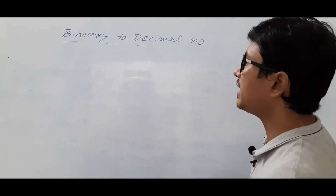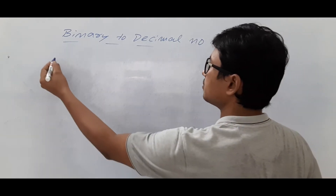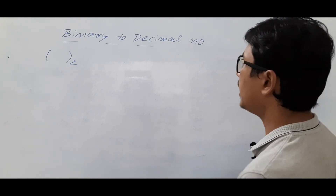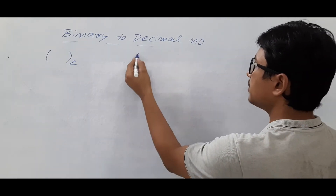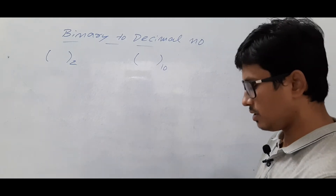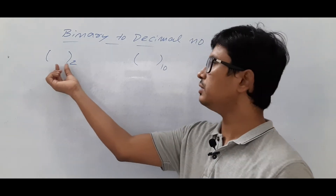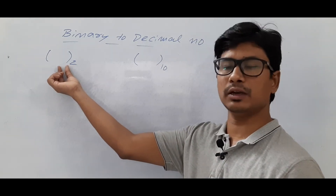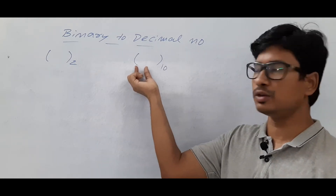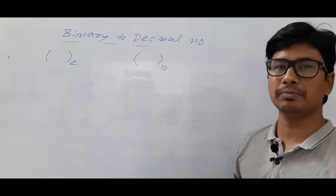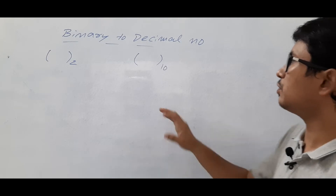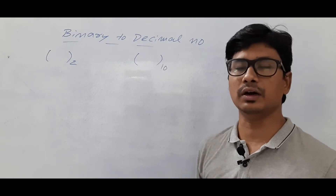As you know, a binary number is in base 2 format and a decimal number is in base 10. In binary, the minimum element allowed is 0 and the maximum is 1. In decimal, the minimum is 0 and the maximum is 9.